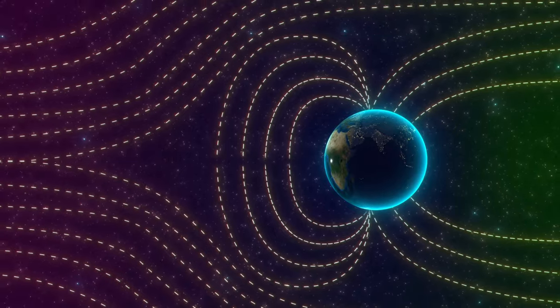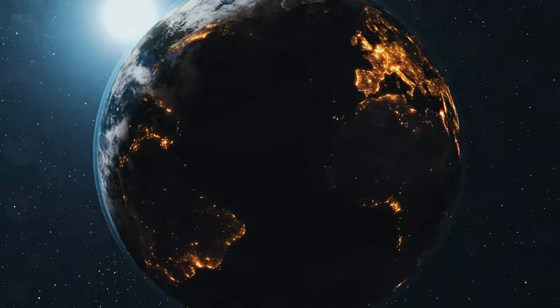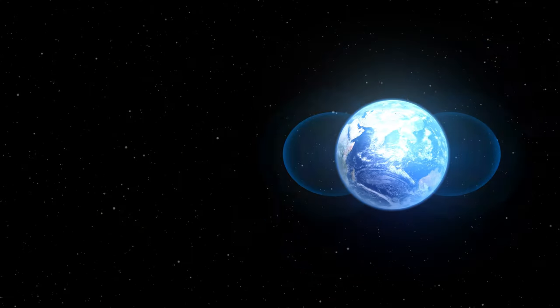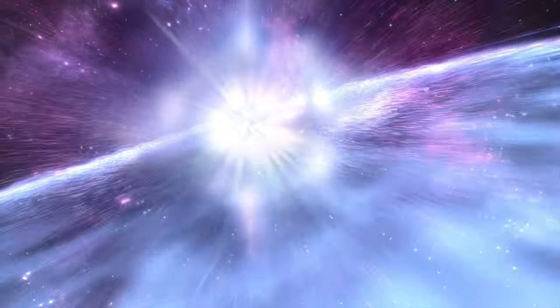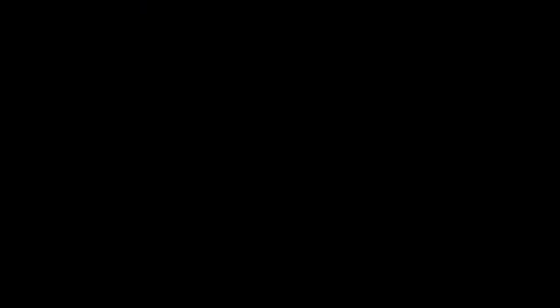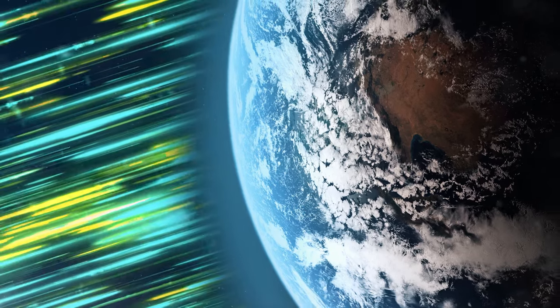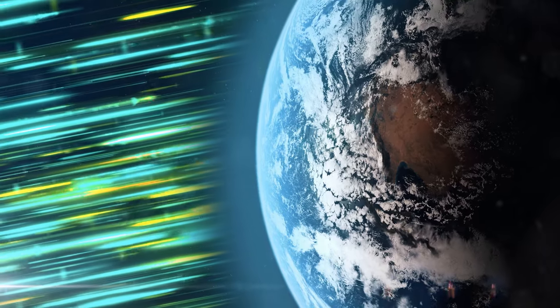However, the Earth's field deflects these particles, creating a safe harbor for life to flourish. This magnetic shield also protects us from cosmic rays, high-energy particles, distant supernovae, and other cosmic events. Without such protection, these rays could pose a serious threat to humanity's biological systems and electronic infrastructure.